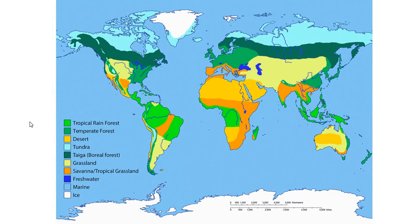This map shows all of the different biomes across the whole world, and you can see there are several different types: tropical rainforest and temperate rainforest, deserts, tundras, taiga or boreal forests, grasslands, savannas, tropical grasslands, freshwater, marine, and ice. We will take a closer look at each of these types of biomes.